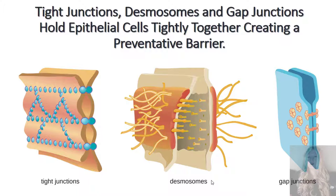Our skin cells, or epithelial cells, are held together tightly using these types of cell junctions. This creates a physical preventative barrier to keep the outside out and the inside in.